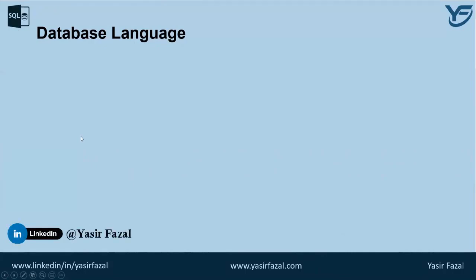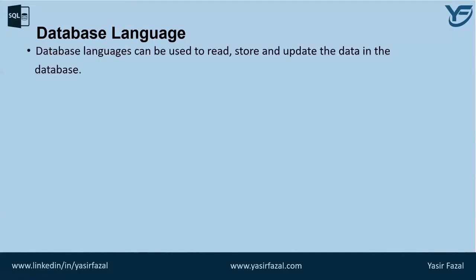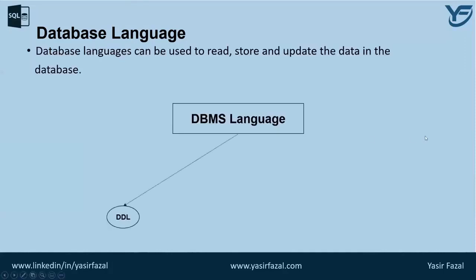With respect to the functionality of database language, any database language needs to perform four main functions. DBMS language is actually subcategorized into four languages. The first one is DDL — Data Definition Language — and it is used to define the database structure or the schema of the database. The next one is DML — Data Manipulation Language.